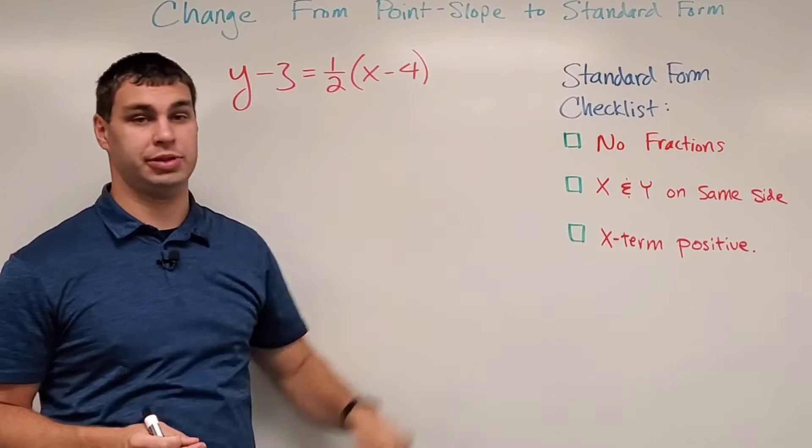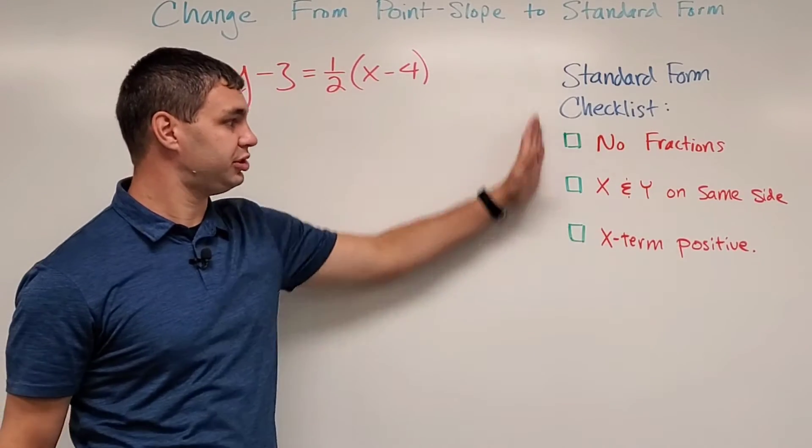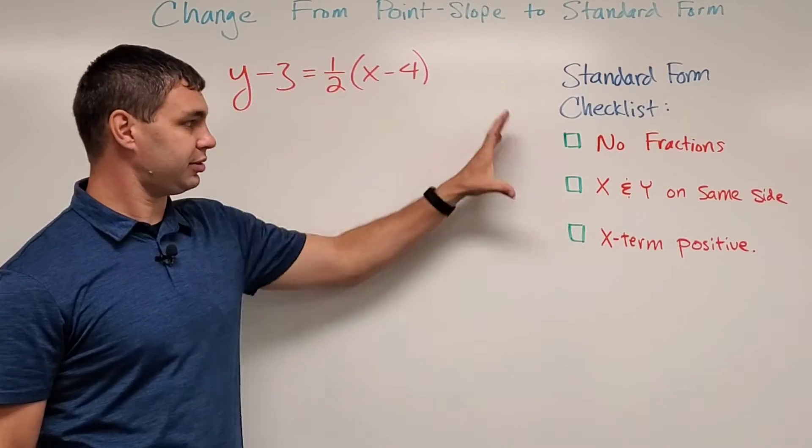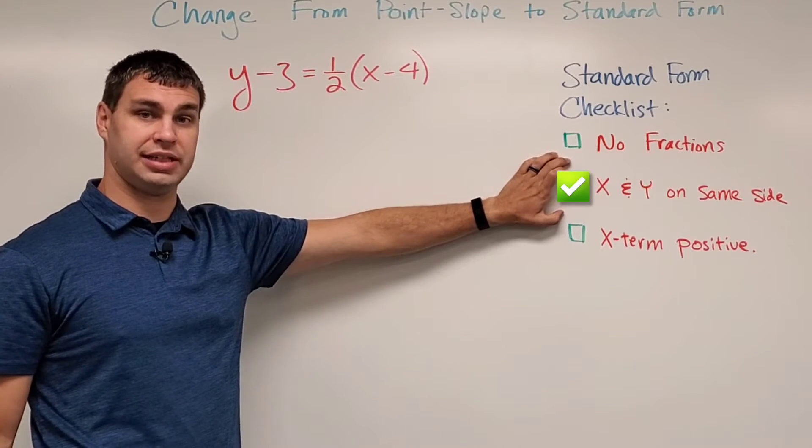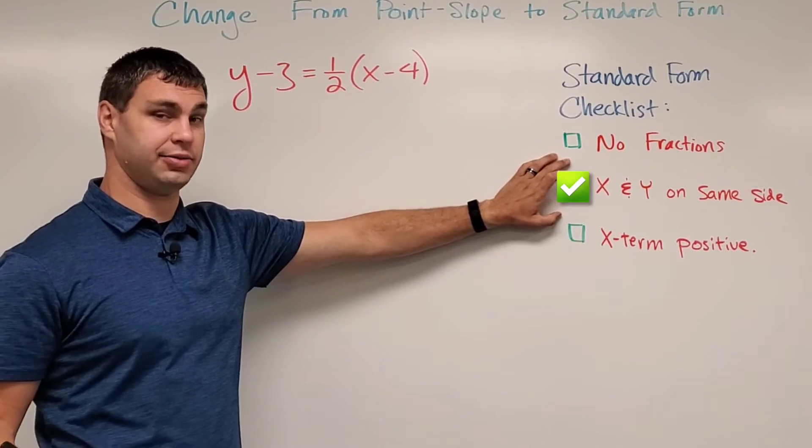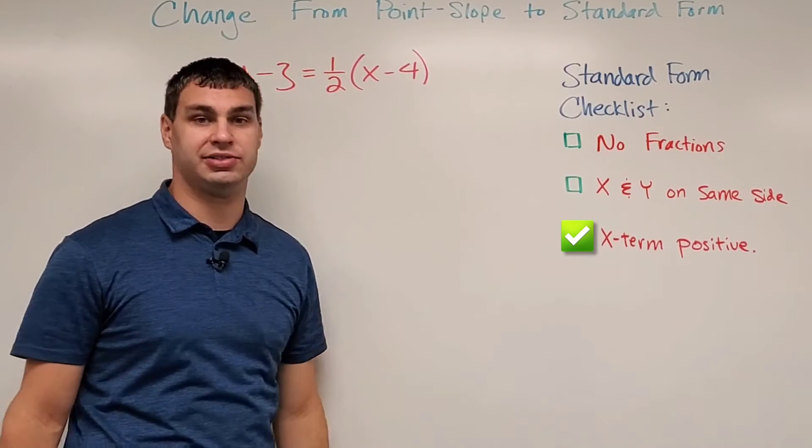We're going to do that using our standard form checklist. If you remember our checklist for standard form, we cannot have fractions, our x and y terms have to be on the same side and the only things on that side of the equation, and lastly our x term has to be positive.